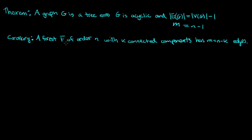A forest — and remember what a forest is: a forest is just like a tree but it doesn't have to be connected. So it has to be acyclic, but we don't know whether or not it's connected. A forest of order n, meaning n vertices and k connected components, is going to have m equal to n minus k edges.